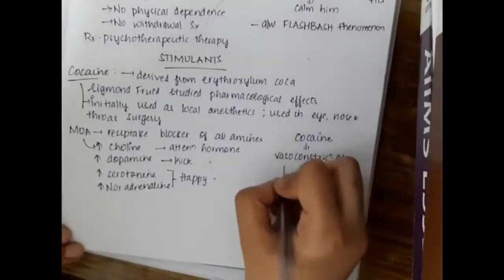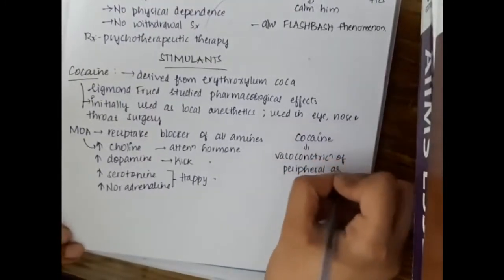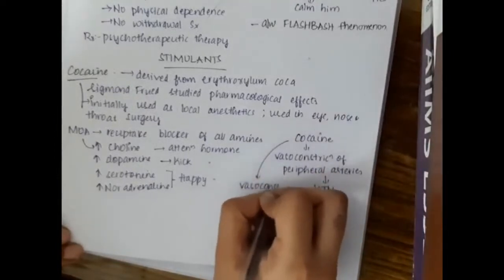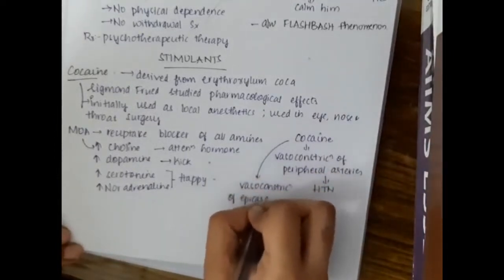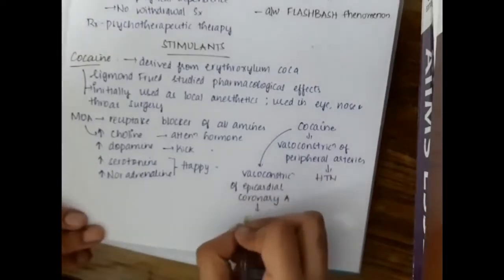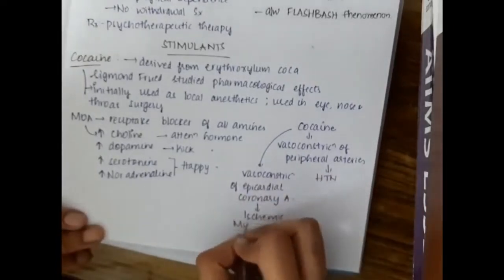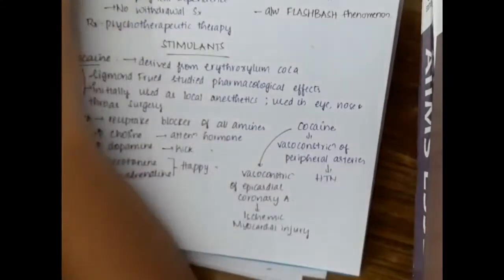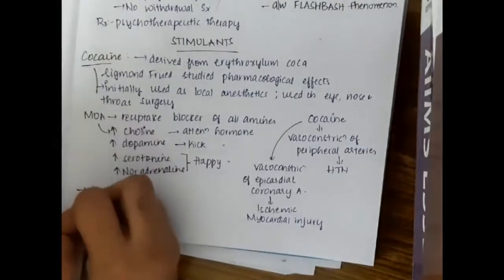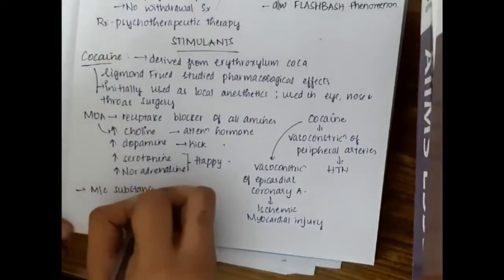Cocaine causes vasoconstriction of peripheral arteries. These are the bad effects. It causes hypertension and vasoconstriction of epicardial coronary arteries in our heart, which will lead to ischemia and myocardial injury.